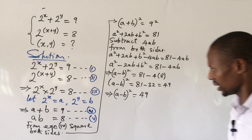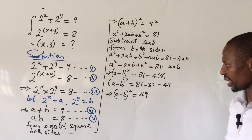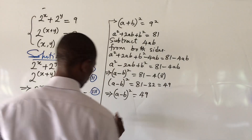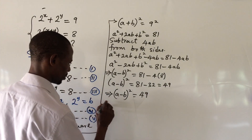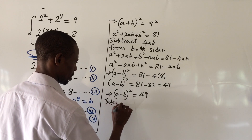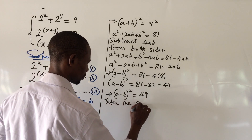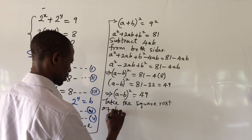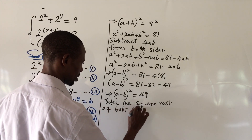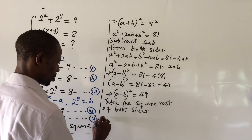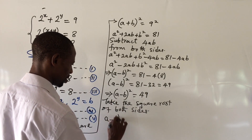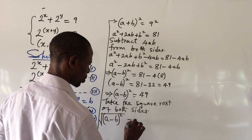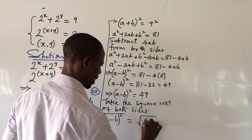At this point we take the square root of both sides. Taking the square root of both sides gives us the square root of a minus b squared equals the square root of 49, which means a minus b equals plus or minus 7.